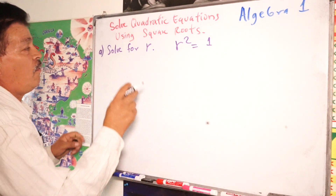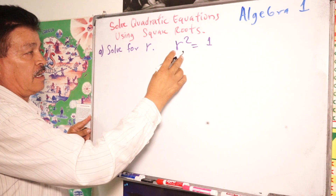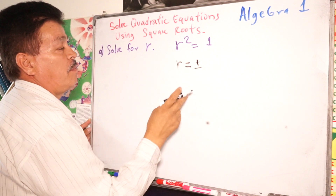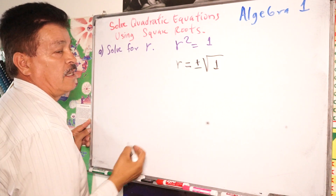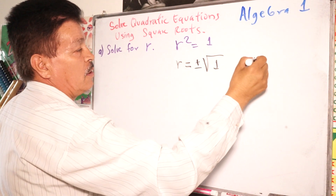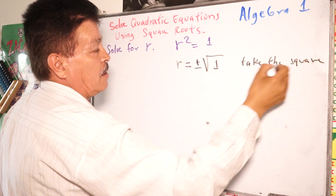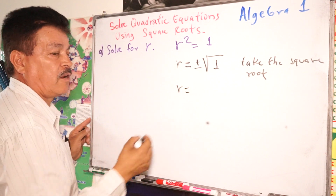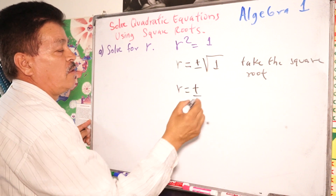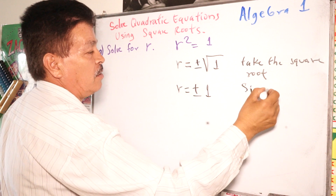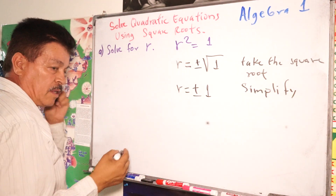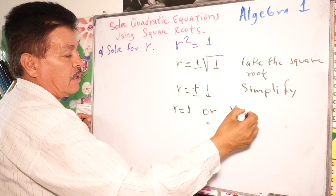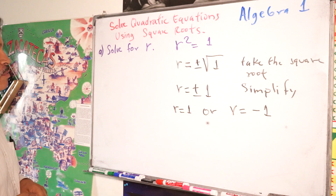So the next step is to solve for r. We have r squared equals one. We take the square root of both sides: r equals positive or negative square root of one. Simplifying, the square root of one is one, so r equals positive or negative one. The solution is r equals one or r equals negative one.